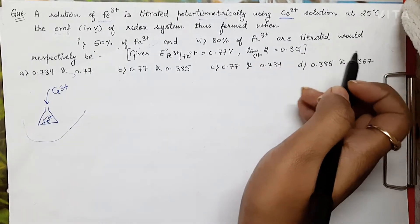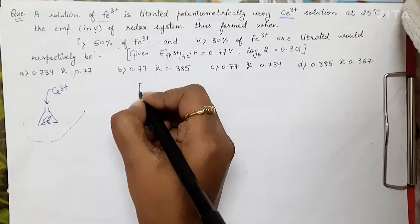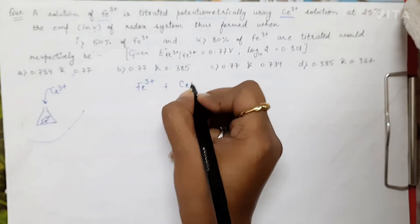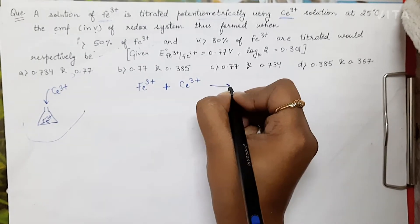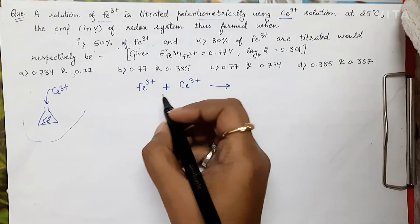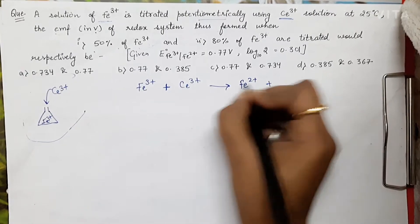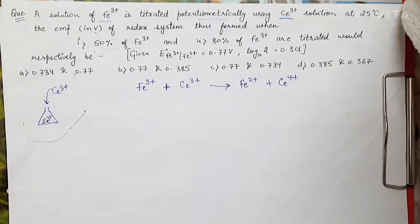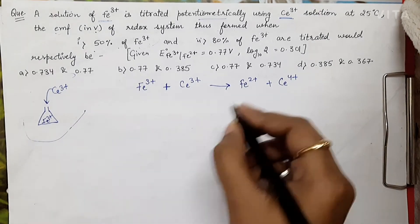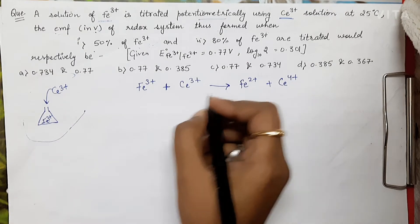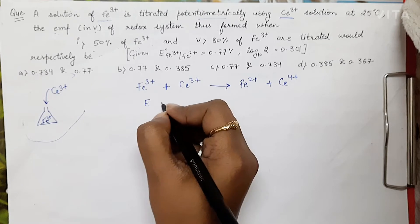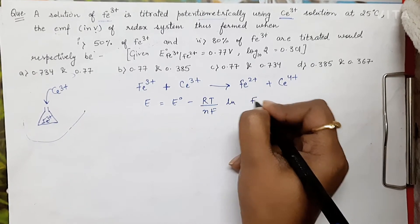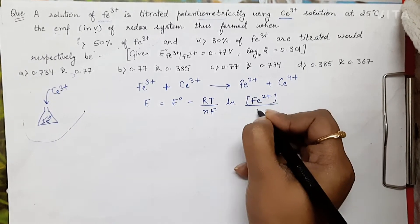If we look at this system, we have Fe³⁺ solution and Ce³⁺ solution is getting added. After the addition, Fe³⁺ will be changing to Fe²⁺ and Ce³⁺ will be changing to Ce⁴⁺. For this particular reaction, if I write down the Nernst equation, it will be E = E⁰ − (RT/NF) ln([Fe²⁺]/[Fe³⁺]).